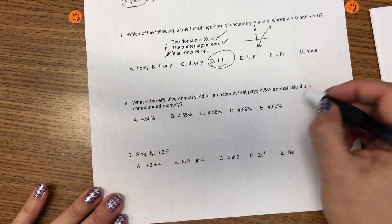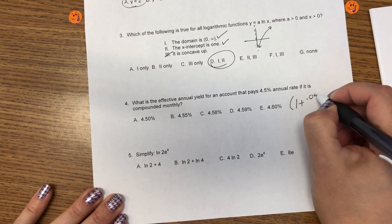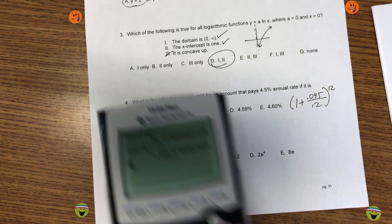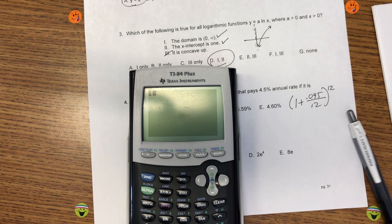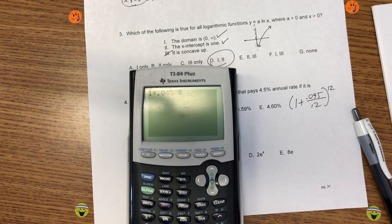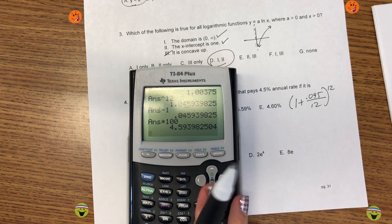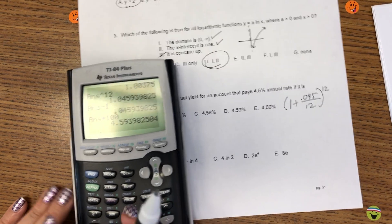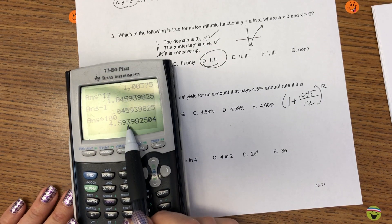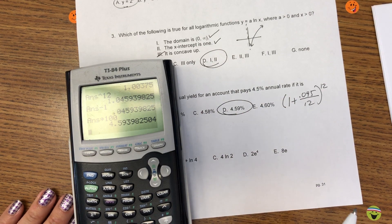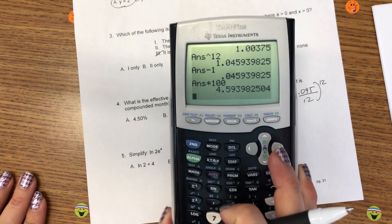What is the effective annual yield? So, I'm only going to use this monthly. Let's see. How many decimal places we got here? Two. So, this 3 does not round the 9. So, 4.59%. Sorry, there's a glare there.